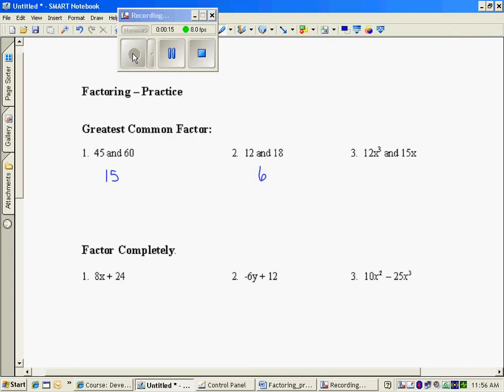And between 12 squared and 15x, the greatest common factor would be 3. An x cubed, an x, a 3x. You can't take more x's than you have.